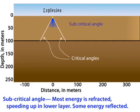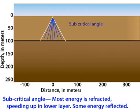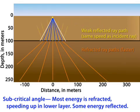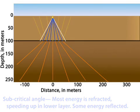Rays that strike the boundary at less than critical angle, subcritical, have most of the energy refracted to travel at a shallower angle in the fast layer with less energy reflected upward.